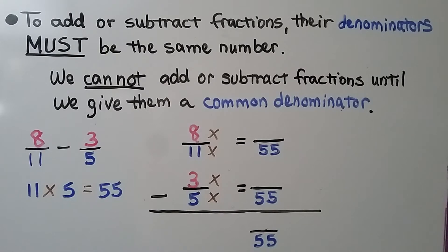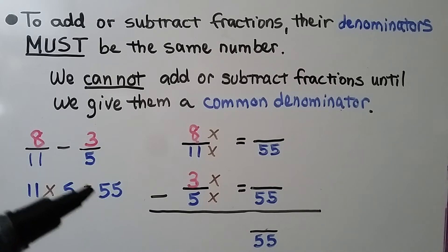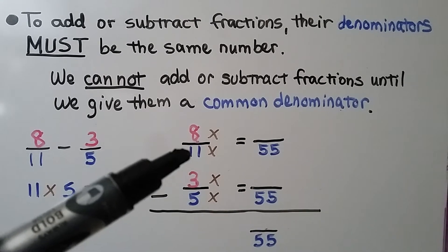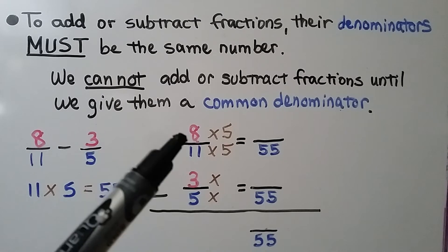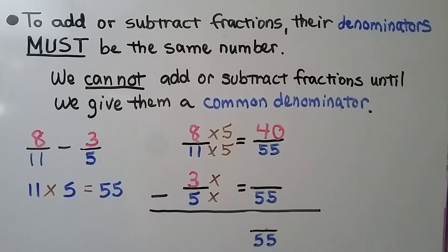To add or subtract fractions, their denominators must be the same number. We cannot add or subtract fractions until we give them a common denominator. Here we have 8 elevenths minus 3 fifths. We can multiply their denominators: 11 times 5 equals 55, and we use that as their common denominator. 11 times 5 equals 55, so we multiply 8 times 5 to find our numerator.